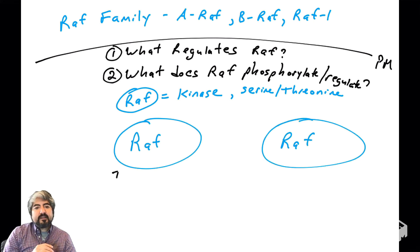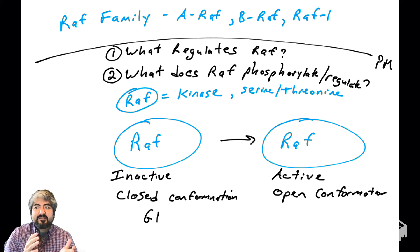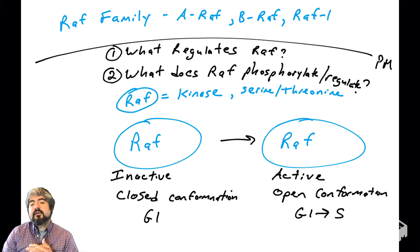RAF can exist in different conformations, in different stages of the cell cycle. When we're talking about human cancers, we talk about the pro-growth version and the regular version that cells are in G1. In the G1 phase of the cell cycle, where there's not any pro-growth signals, the RAF kinase enzyme activity is very low. It's inactive and in a closed conformation.